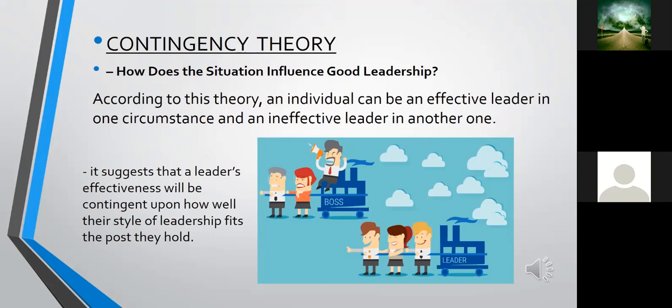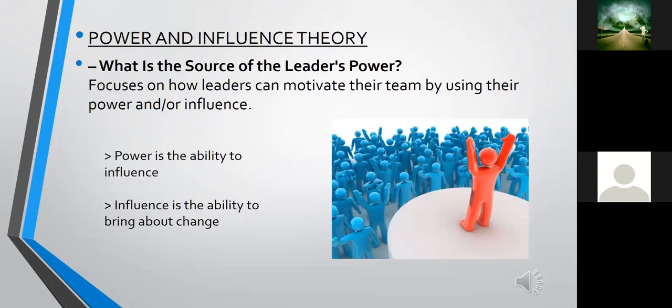These are all questions that contingency leadership theories try to address. Next are the power and influence theories. These theories examine the source of a leader's power and focus on how leaders can motivate their team by using their power and influence. Power is the ability to influence, and influence is the ability to bring about change.